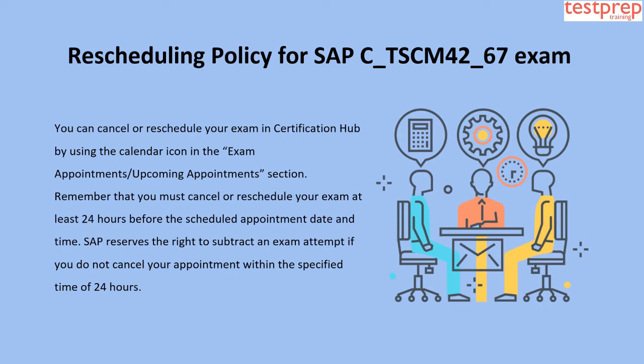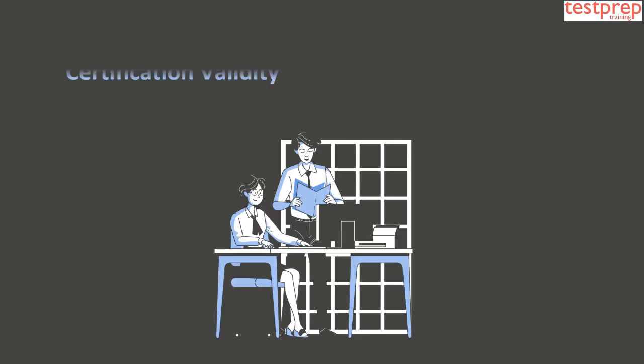Rescheduling policy: you can cancel or reschedule your exam in the Certification Hub using the calendar icon in the exam appointments or upcoming appointments section. You must cancel or reschedule at least 24 hours before the scheduled appointment. SAP reserves the right to subtract an exam attempt if you do not cancel within the specified 24-hour window.